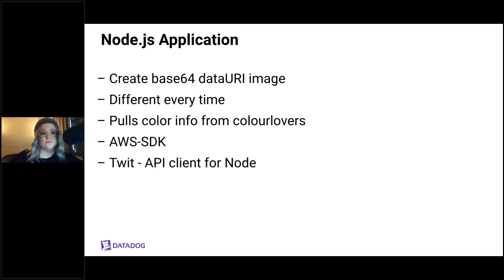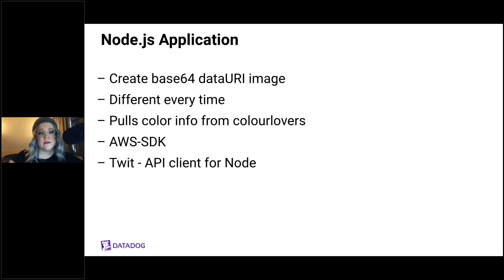For our actual function we'll be using Node.js — just a matter of personal preference. We'll use canvas to create generative art based on color palettes from the Color Lovers API. After images are created we'll save them to an S3 bucket with the AWS SDK for non-compressed versions later. We'll also use Twit, which is an API client for Node that allows us to interact with the Twitter API to upload media and construct a tweet.